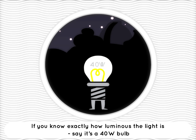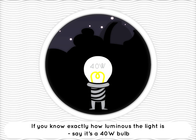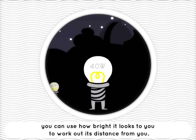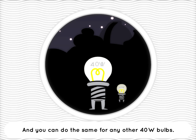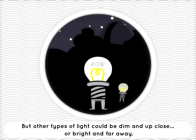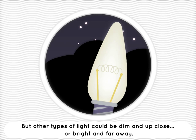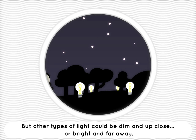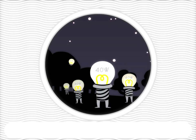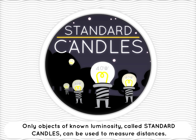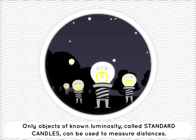And if it moves towards you, it will appear to get brighter. If you know exactly how luminous the light is — say it's a 40 watt bulb — you can use how bright it looks to you to work out its distance. You can do the same for any other 40 watt bulbs, but other types of light could either be dim and up close or bright and far away. Only objects of known luminosity, called standard candles, can be used to measure distances.